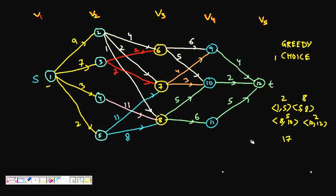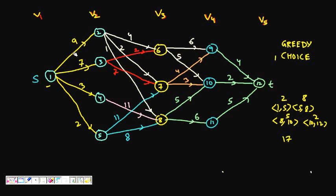The greedy sum is 2 + 8 + 5 + 2 = 17. But looking at the optimal solution: if we choose 1→2 with cost 9, then 2→7 with cost 2 (sum 11), then 7→9 with cost 3 (sum 14), then 9→12 with cost 2, we get a total path length of 16 — which is better than the greedy result.